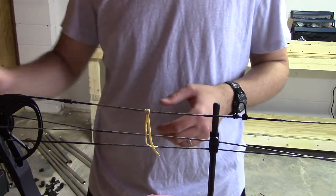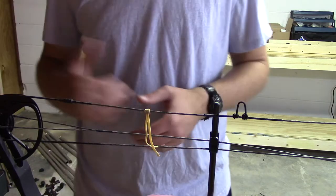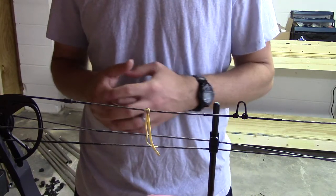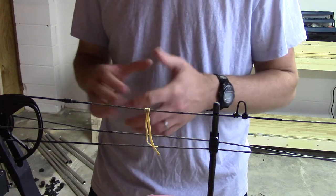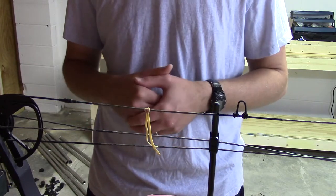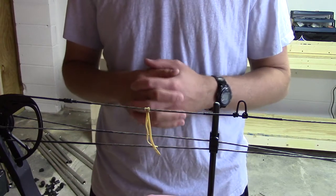We have the bow in the press here. I use an Easy Green press. I used the Bowmaster Bow Press by Martin Archery for many years, did not have a single problem with it. It's a great bow press, and for 50, 60 bucks, however much it is, it is totally worth every single penny.